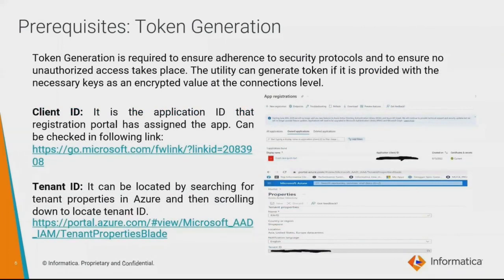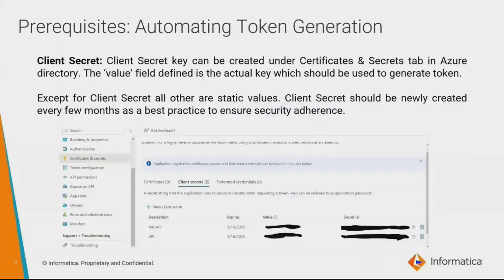Next, we'll talk about the token generation process. We would need to look up two IDs to connect to the right application with the correct user, and also generate a passcode referred to as the client secret key. First is the Client ID — it is the application ID assigned by the registration portal, which can be checked in the provided link. Next is the Tenant ID, which can be located by searching for tenant properties in Azure and scrolling down to locate it. After obtaining both IDs, the Client Secret Key can be created under the Certificates and Secrets tab in Azure Directory. The value field is the actual key required to generate the token. Client secret should be newly created every few months as a rotation policy is required to ensure best practices and security adherence.